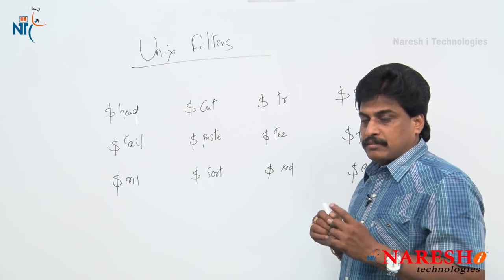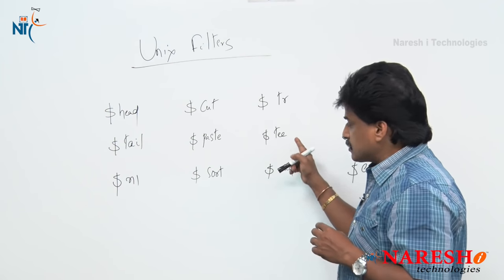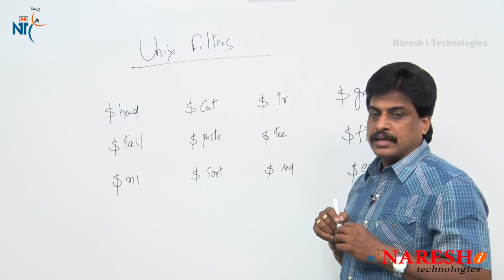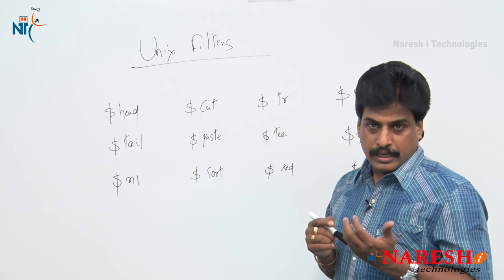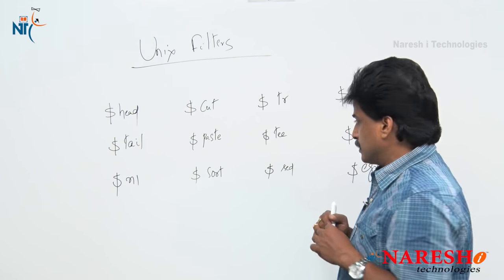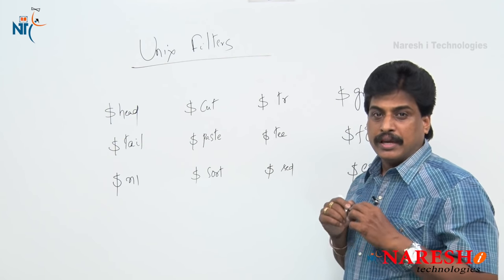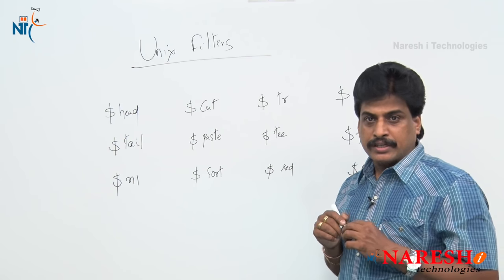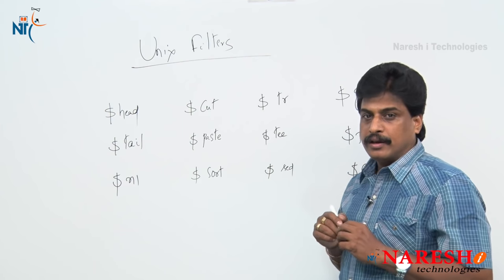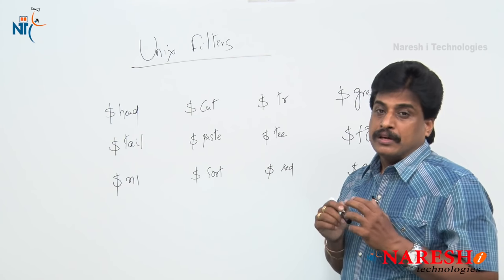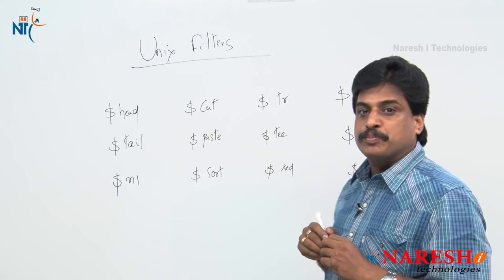Paste merges lines of text files — it merges parallelly (side by side) as well as serially (one after another). Sort sorts the data and displays it on the standard output device or stores it in another file. TR means translate — converting one format to another. For example, lowercase characters in a file can be converted to uppercase using TR. TEE is a bi-directional Unix filter — at a time we can send one output to more than one screen or file.